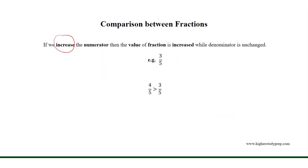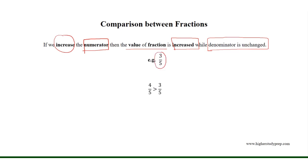If we increase the numerator, then the value of the fraction is increased while the denominator is unchanged. For example, if we consider the fraction 3 over 5, where 3 is the numerator and 5 is the denominator, and we increase the numerator from 3 to 4 — where 4 is greater than 3 — therefore the fraction 4 over 5 is greater than the fraction 3 over 5.